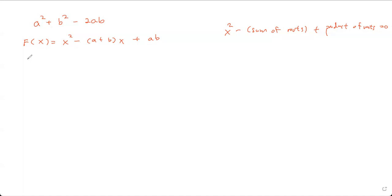So how is that going to help? Notice that a and b are the roots. So if I substitute x equals a into the equation, I'm going to get a squared minus (a plus b) times a plus ab.